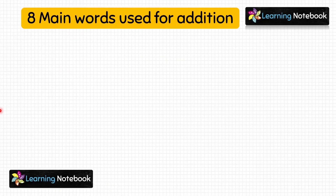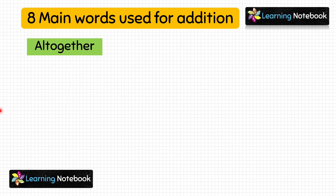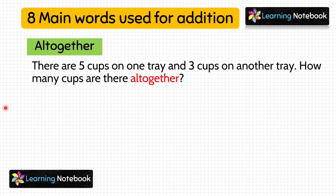Students, at times we get confused whether a given word problem is of addition or subtraction. So to avoid this confusion, here I am giving you 8 main words which are used in addition word problems. The first word is 'altogether.' Like in the word problem we just solved, it says 'how many cups are there all together?' — all together means in total. So if your word problem has the word 'altogether,' it is a word problem on addition.